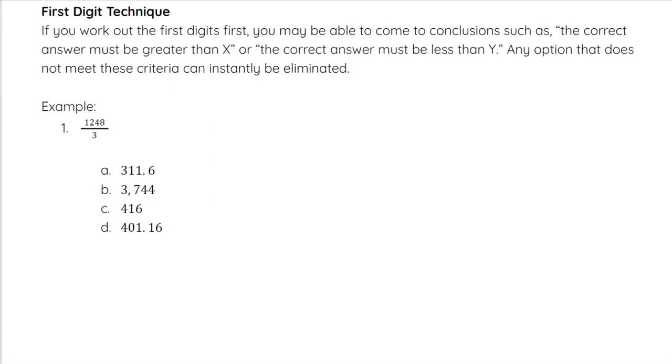Our next technique is called the first digit technique. This is a form of elimination and a little bit of estimation as well. If you work out the first digits first, you may be able to come to conclusions such as the correct answer must be greater than this number. I could think of 1,248 divided by 3 as 1,200 divided by 3. If I round to 1,200, I can just take this 12 and this 3 and divide those and think about 12 divided by 3. That gives me 4, and then I still have the two zeros on top here.